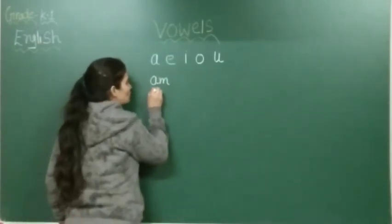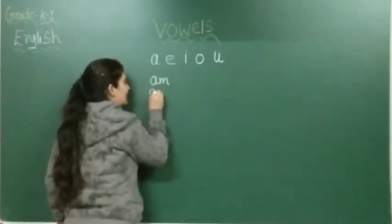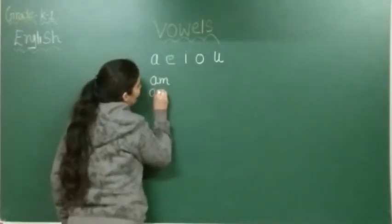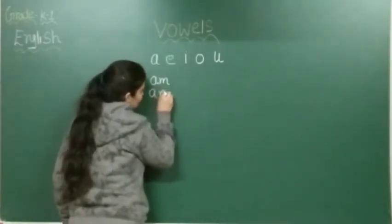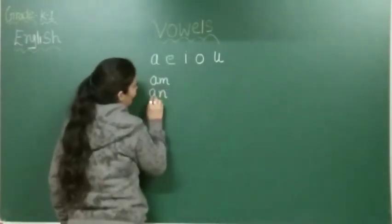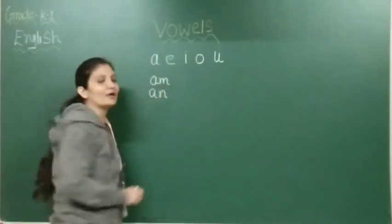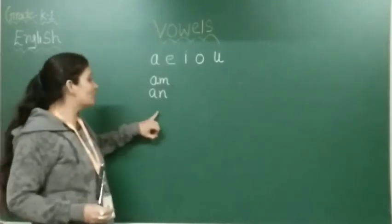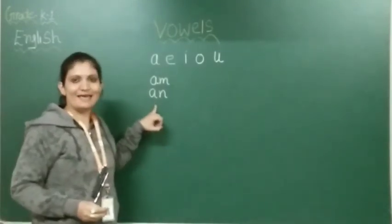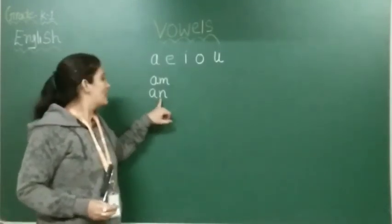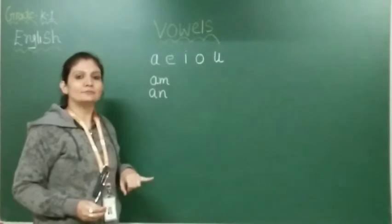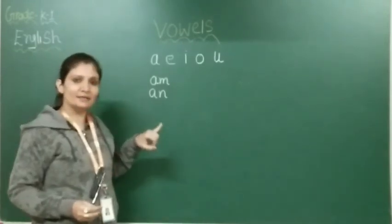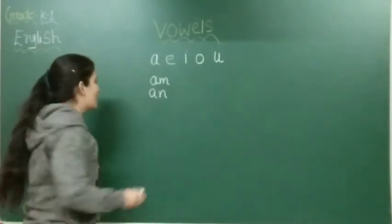The second word is A, N. In phonics, A says 'a', N says 'n' — AN.